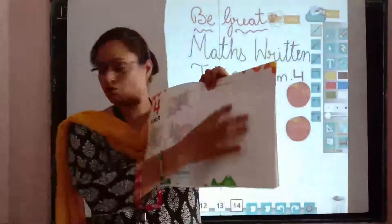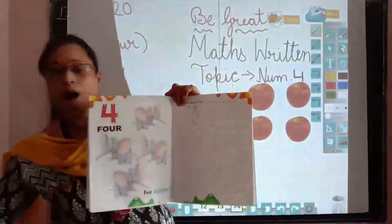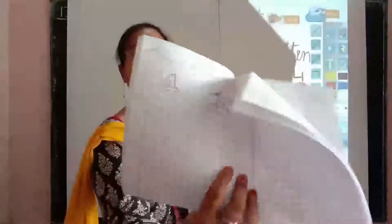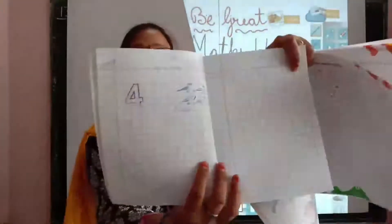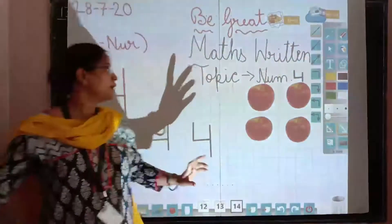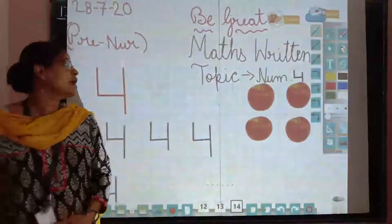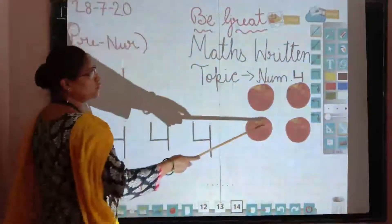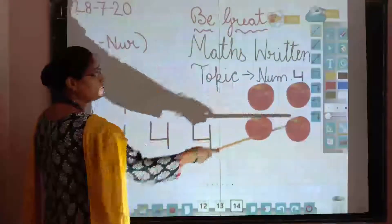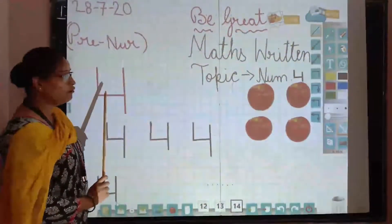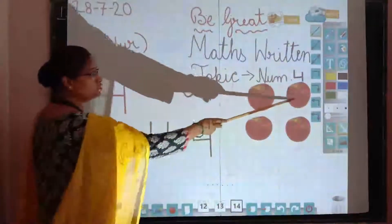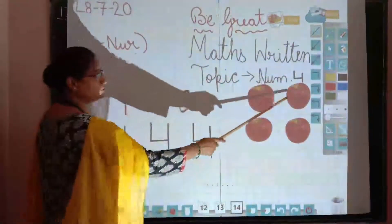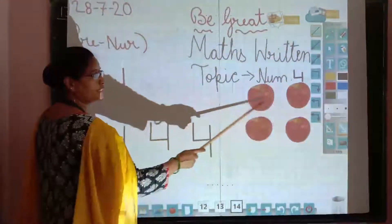If you have a parent, you will practice it and write it in your copybook. The parent will help your child with the copybook. Here we have a picture. This is number 4 — how many apples? 1, 2, 3, 4. How many apples? 4 apples.